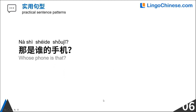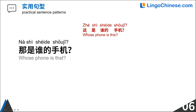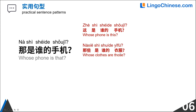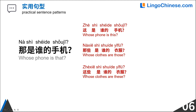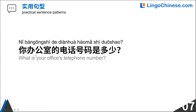Let's look at some sentences made with the structures or words we have learned. 那是谁的手机? 那 means that; 谁 means who. 这是谁的手机? 这 means this. 你办公室的电话号码是多少? 办公室 means office.